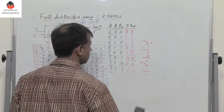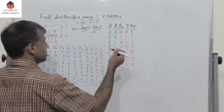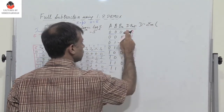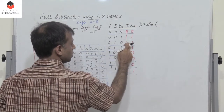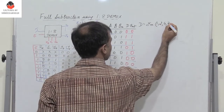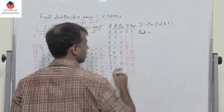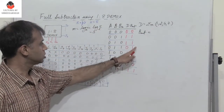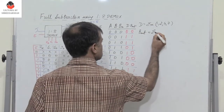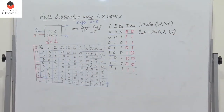What are the expressions for difference and borrow out? The difference is the sum of minterms at positions 1, 2, 4, and 7. The borrow out is the sum of minterms at positions 1, 2, 3, and 7. We are not expanding these expressions but will directly use the minterm positions for the circuit realization.